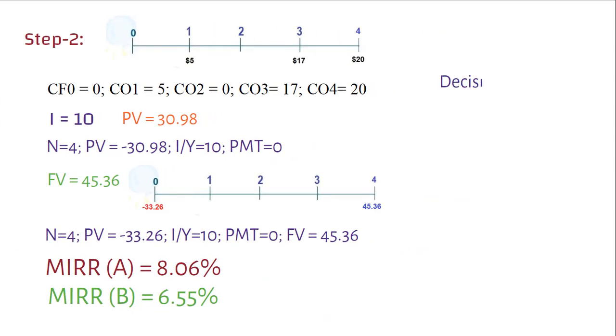Decision Rules. If project A and B are independent, select project that has IRR greater than WACC. So, neither of the projects should be accepted.